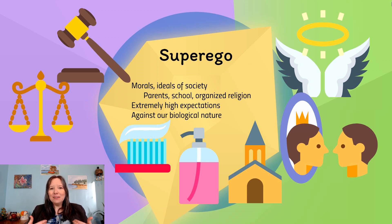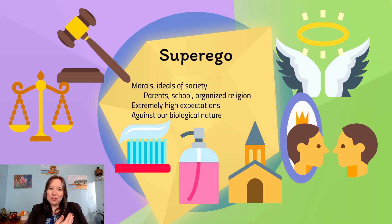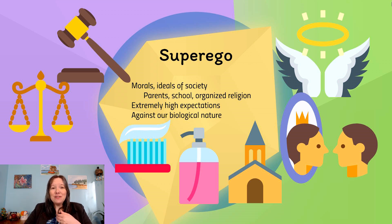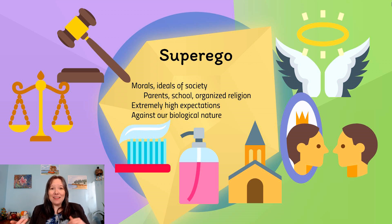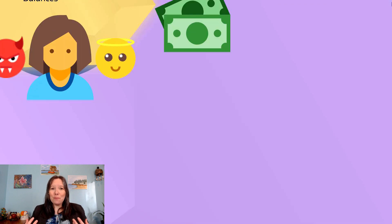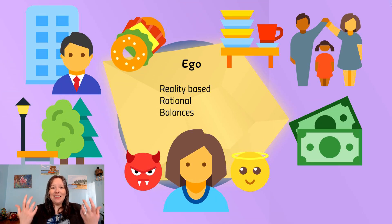If we listen to our id, we cave into short-term desires too much. If we listen to our superego, we deny our biological nature and think too much about unattainable ideals. Thankfully, the impulses of the id and the morals of the superego are balanced out by a third part of our mind: the ego.